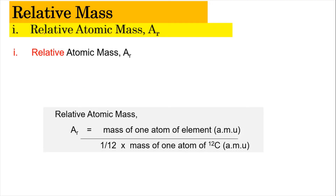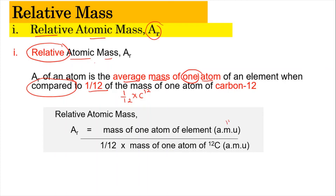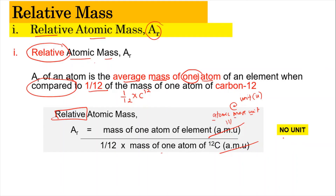Now we're going to move on to relative atomic mass, AR. The relative atomic mass is basically the average mass of one atom compared to 1/12 of the mass of a carbon-12 atom. In the formula, the mass of one atom is expressed in AMU (atomic mass unit, also written as U). Since both are in AMU, they cancel out, so the relative atomic mass has no unit.